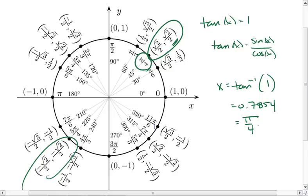Okay, so tangent solutions are pi fourths and 5 pi fourths. Again, plus as many rotations as we want to.